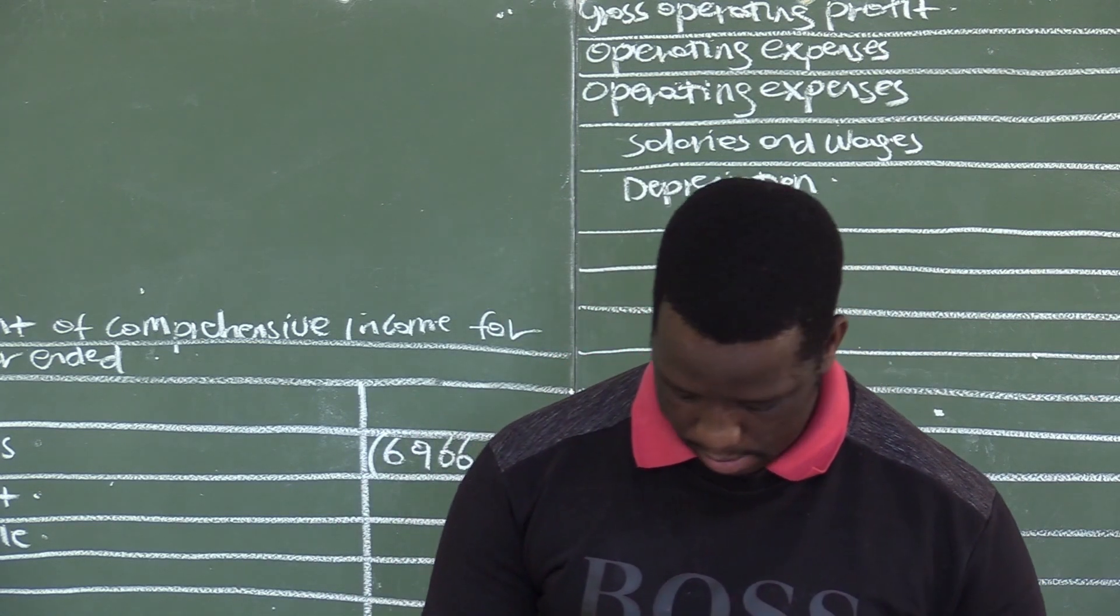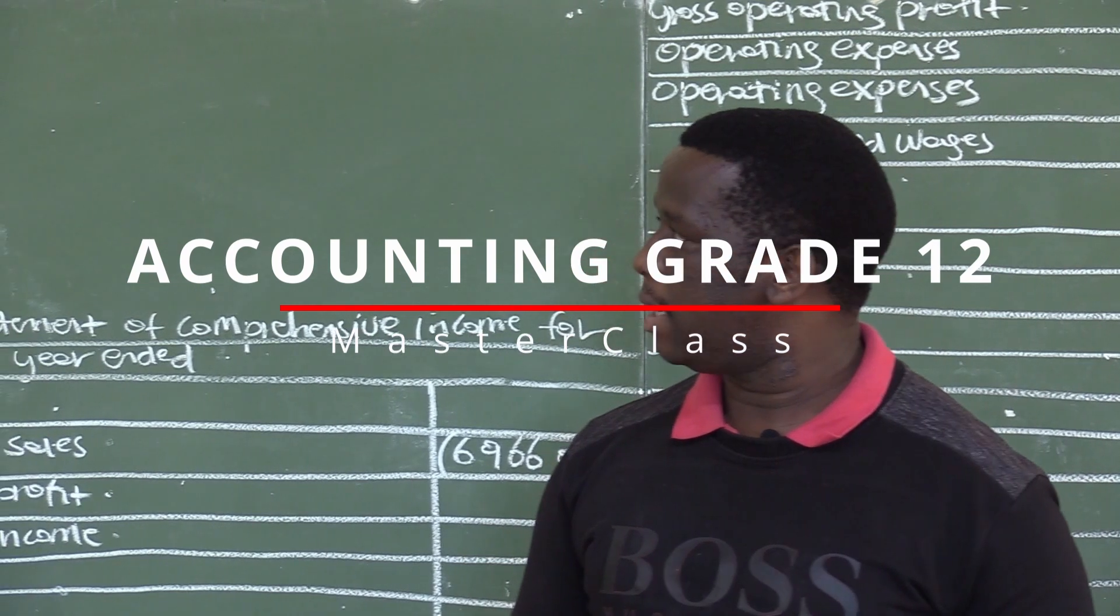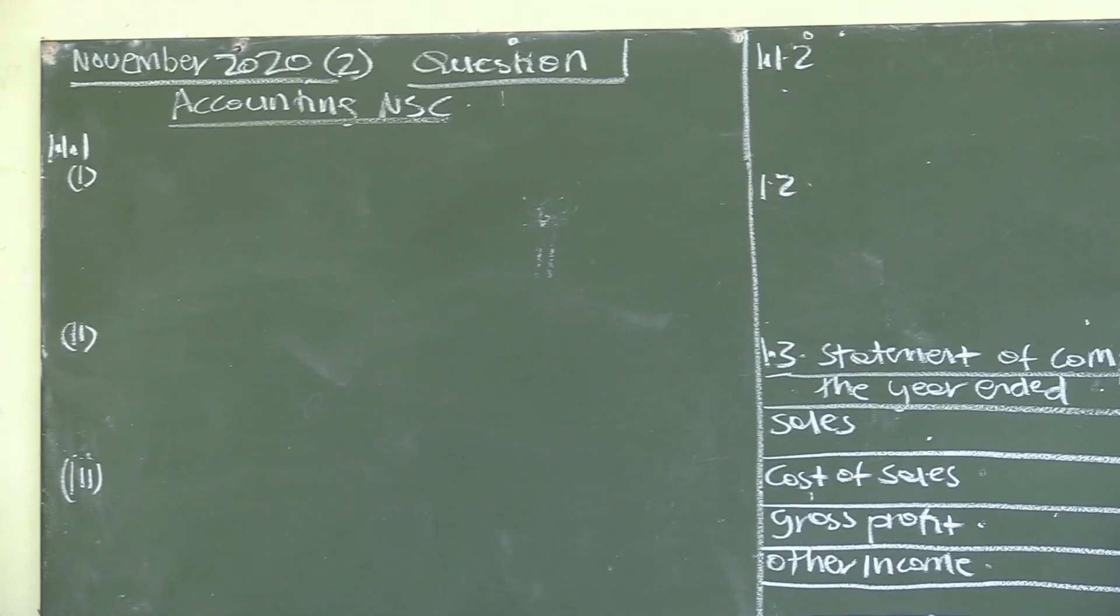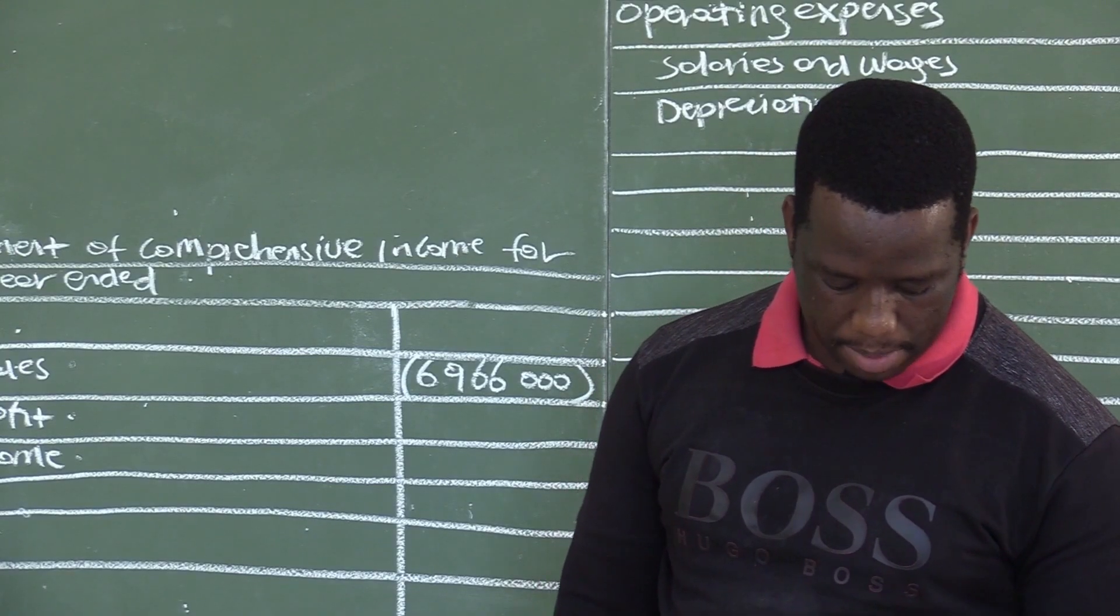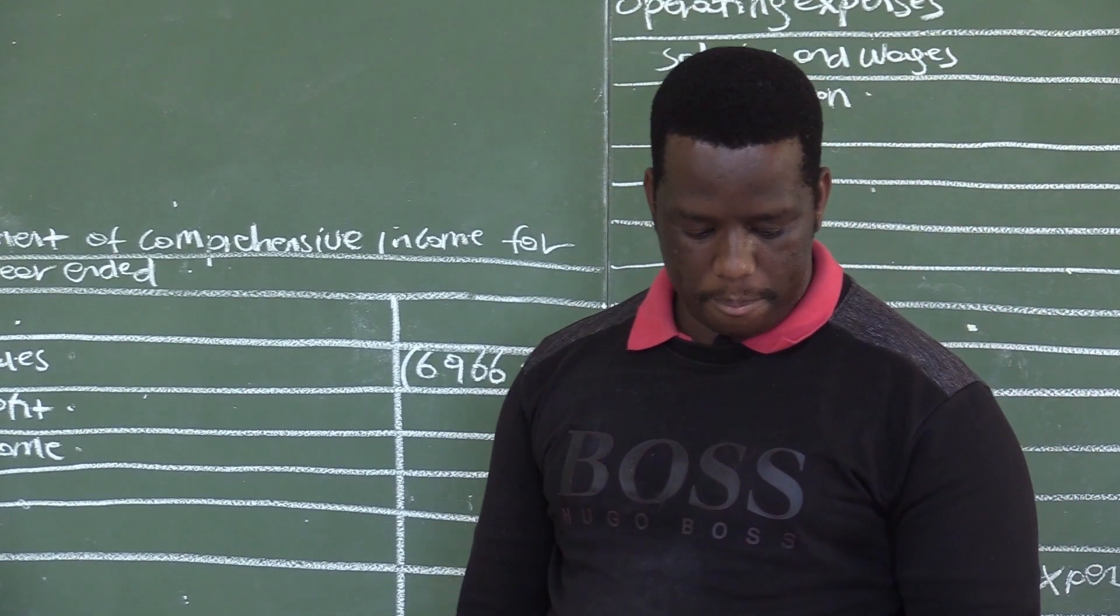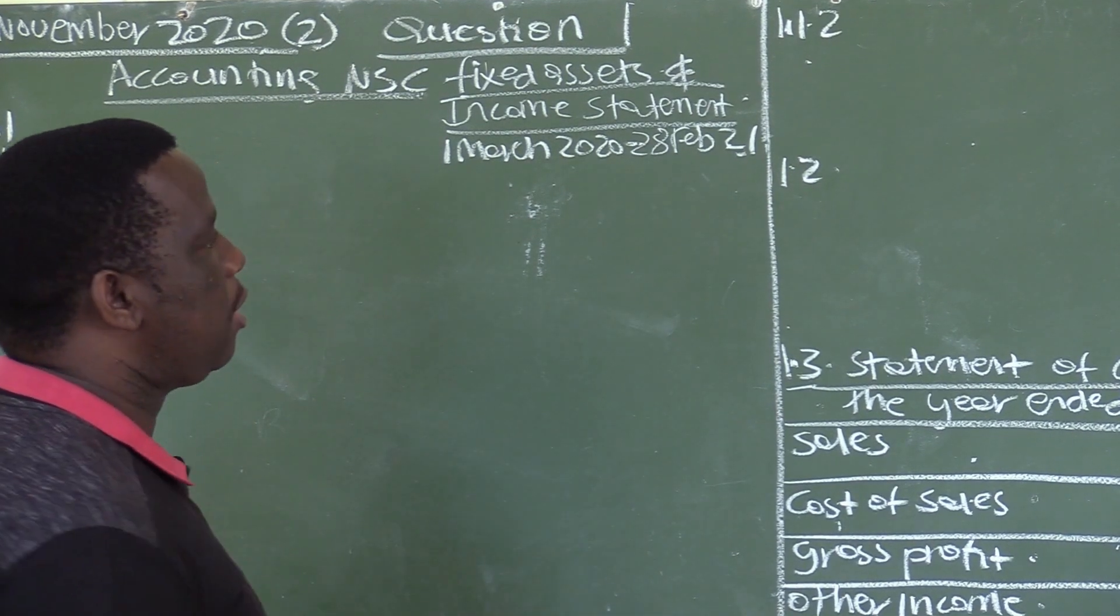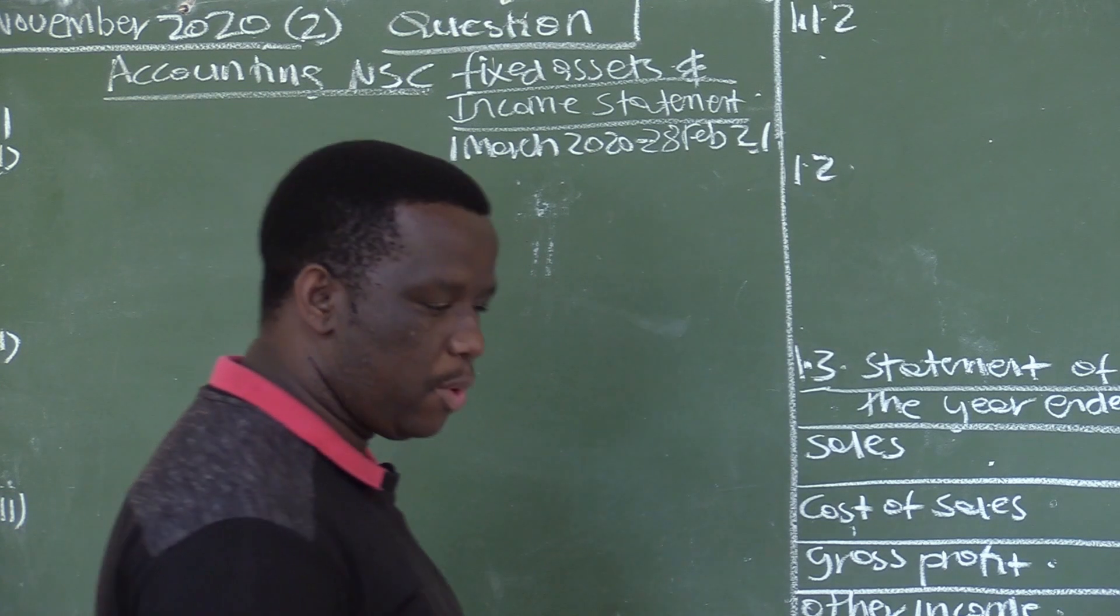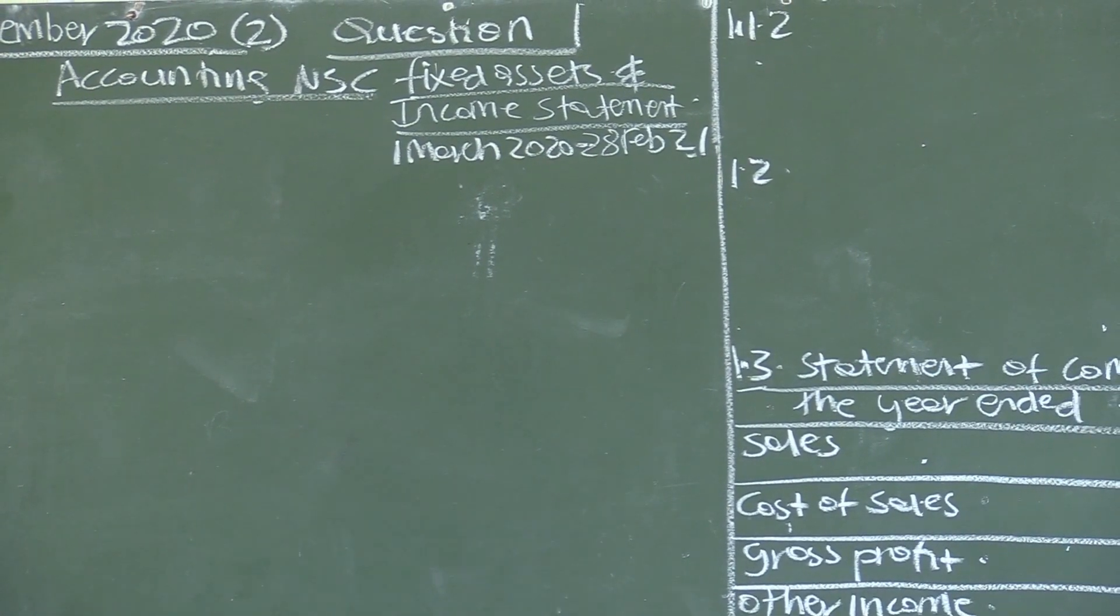Good day, everyone. We are back on the same question paper, November 2022, and we are now doing question one. Question one is based on fixed assets and statement of comprehensive income. The accounting period is 12 months, from 1st March 2020 to 28th February 2021.